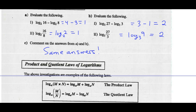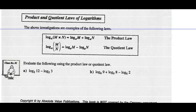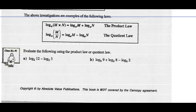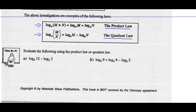So the product and quotient laws of logarithms: the log of M times N base A equals log M base A plus log N base A — that's our product law. And the log of M divided by N base A gives us log M base A minus log N base A — that's our quotient law. It works both directions across that equal sign.